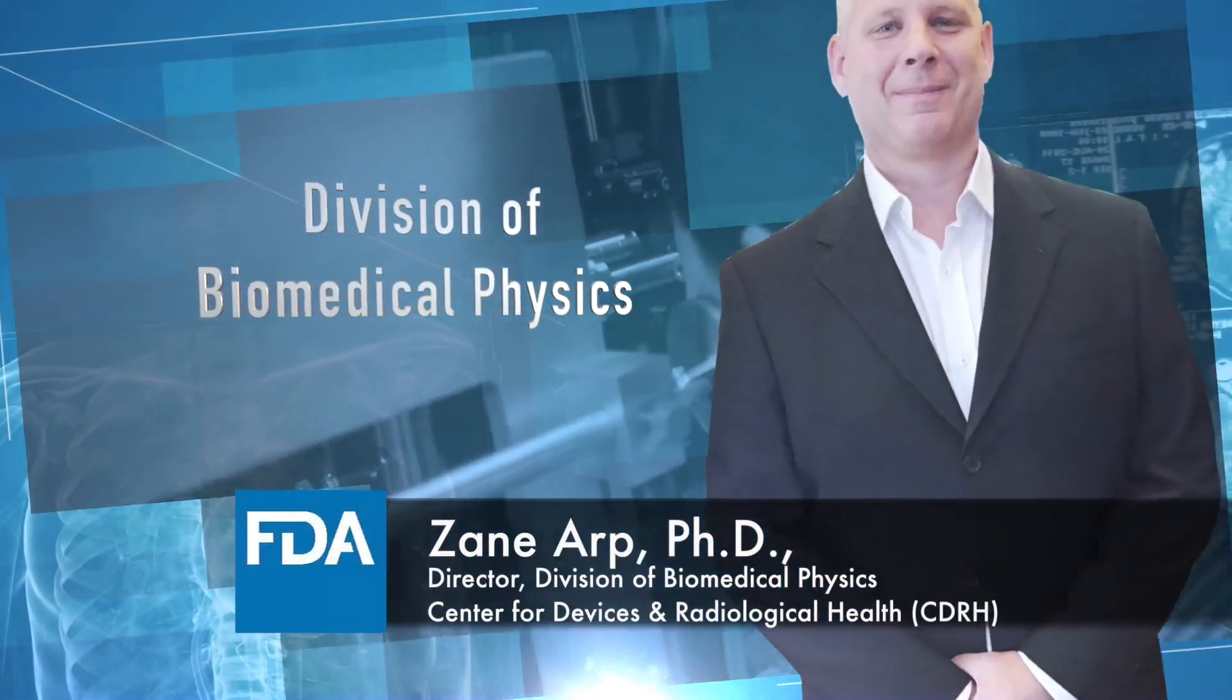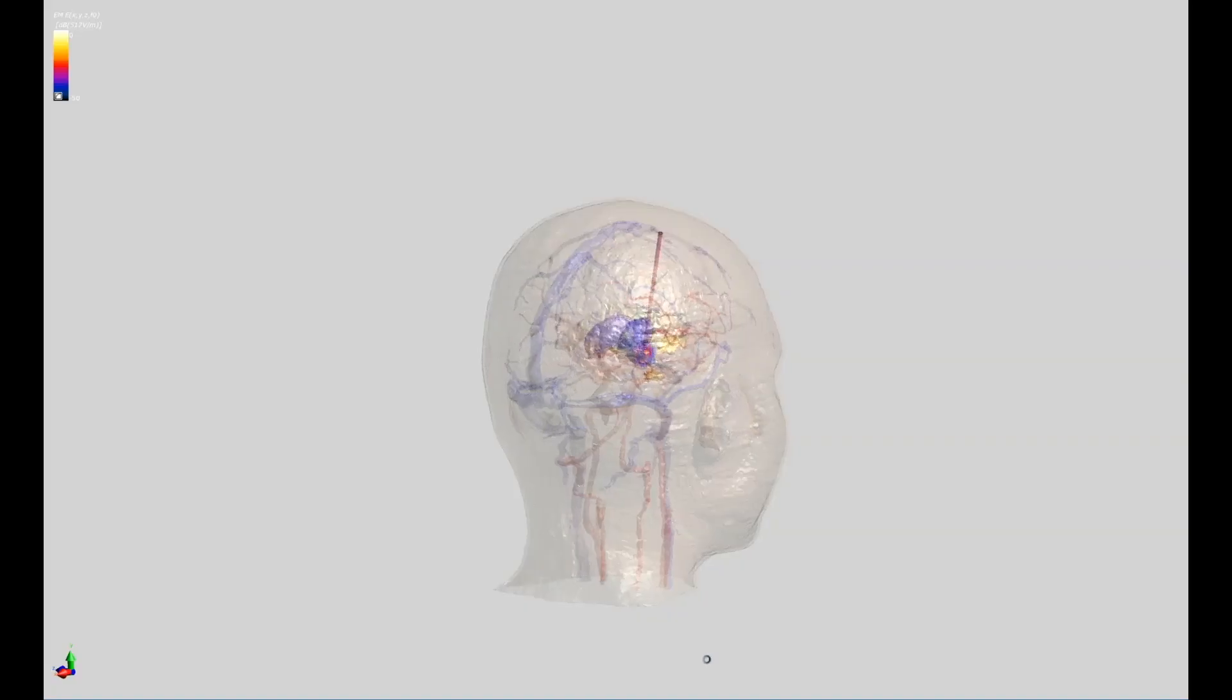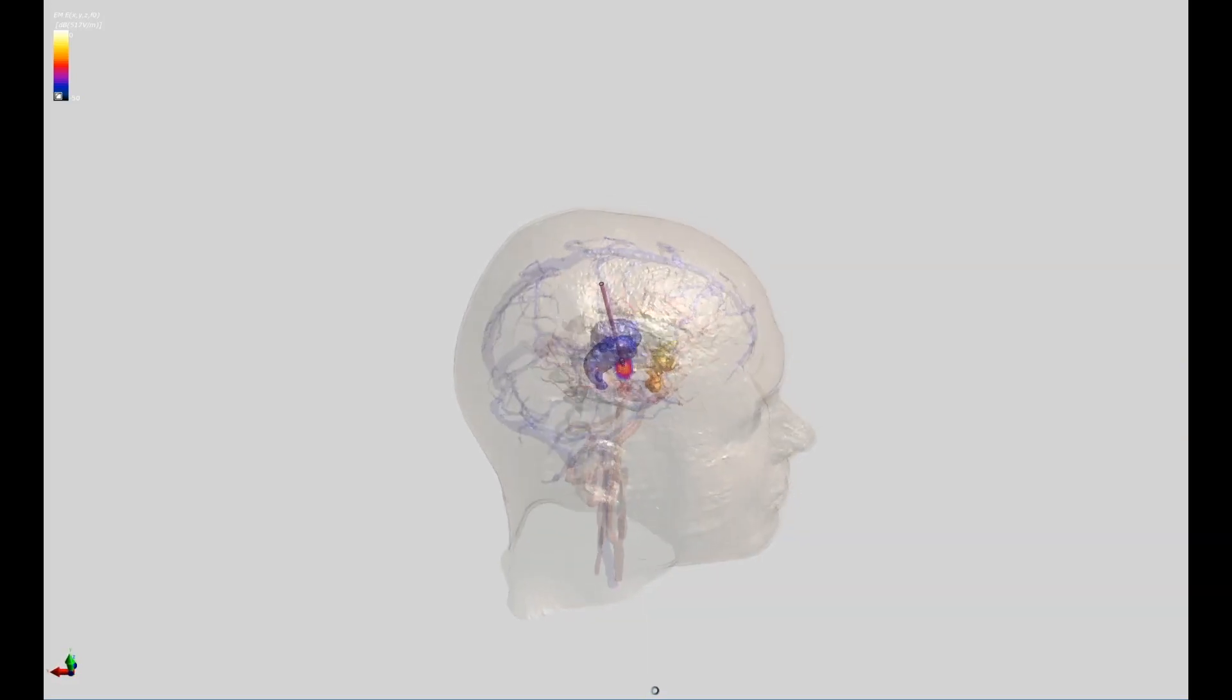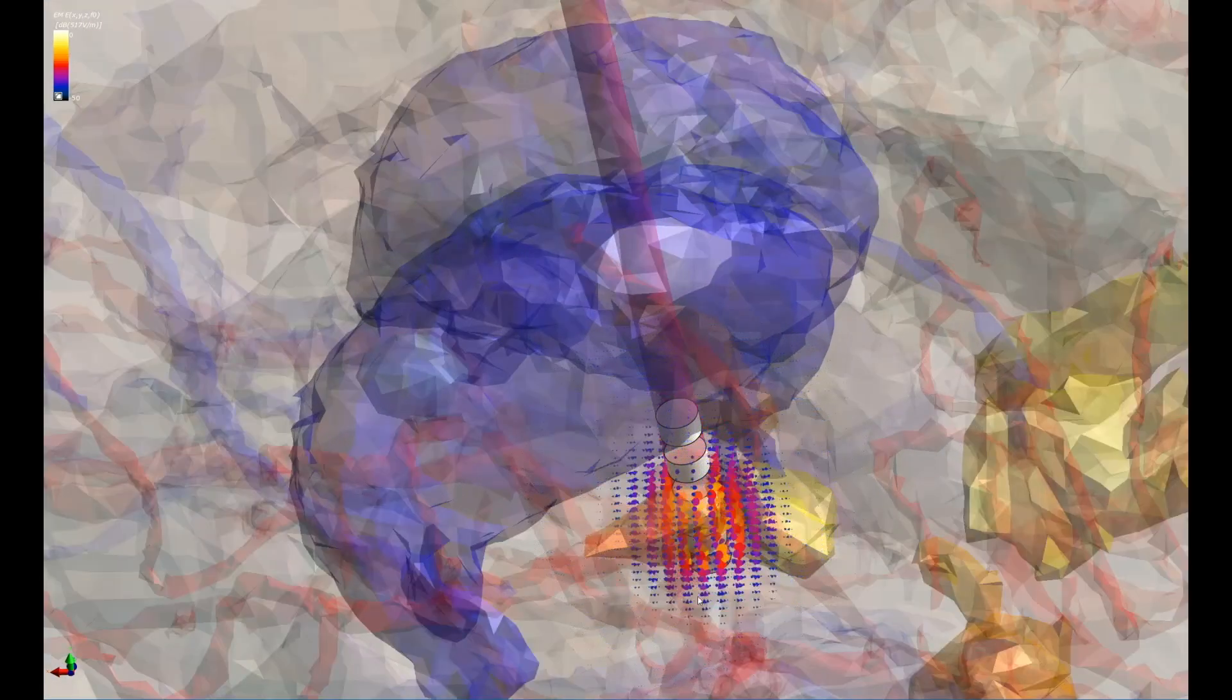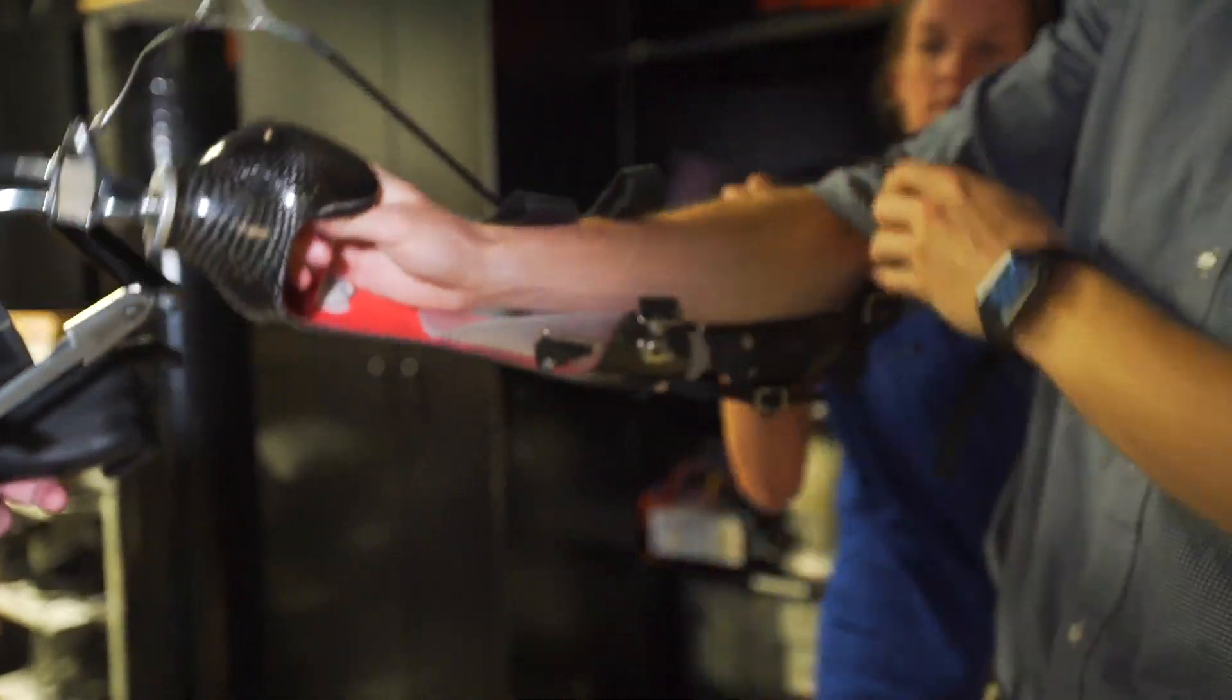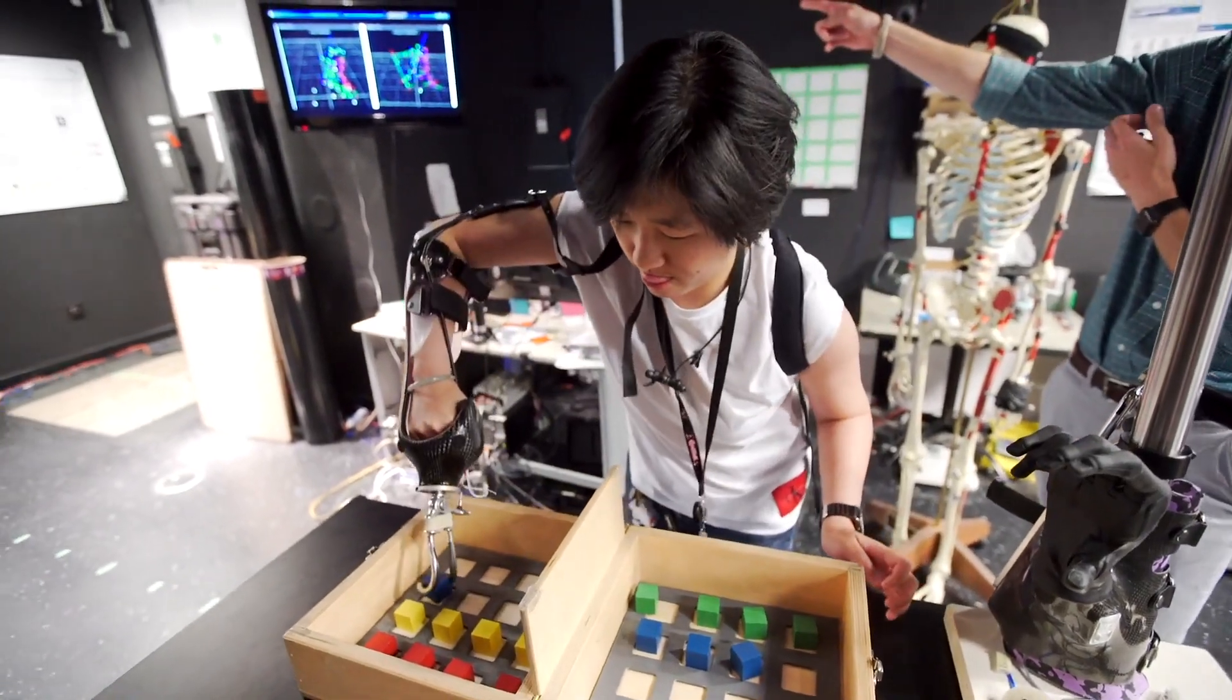Our Division of Biomedical Physics have developed a computer-based anatomical human model which allows us to understand how modern high-resolution MRI scanners may affect implanted devices such as pacemakers. They've also been looking into how easy it is for patients to use their artificial limbs for everyday tasks so that future designs can be even more user-friendly.